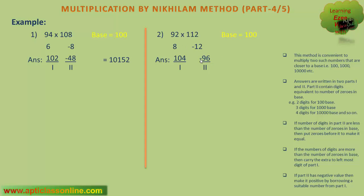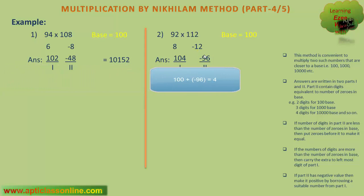But when the second part is a negative value, we have to borrow a suitable number from part 1. If we borrow one from part 1, it will become 100 in part 2, because the value of part 1 is 100 times part 2. So after adding 100 to the second part, it will become 4. And the value of the first part will become 103. So the answer in this case will be 103 and 04 — why 04? Because the second part must contain 2 digits, as there are 2 zeros in the base number.